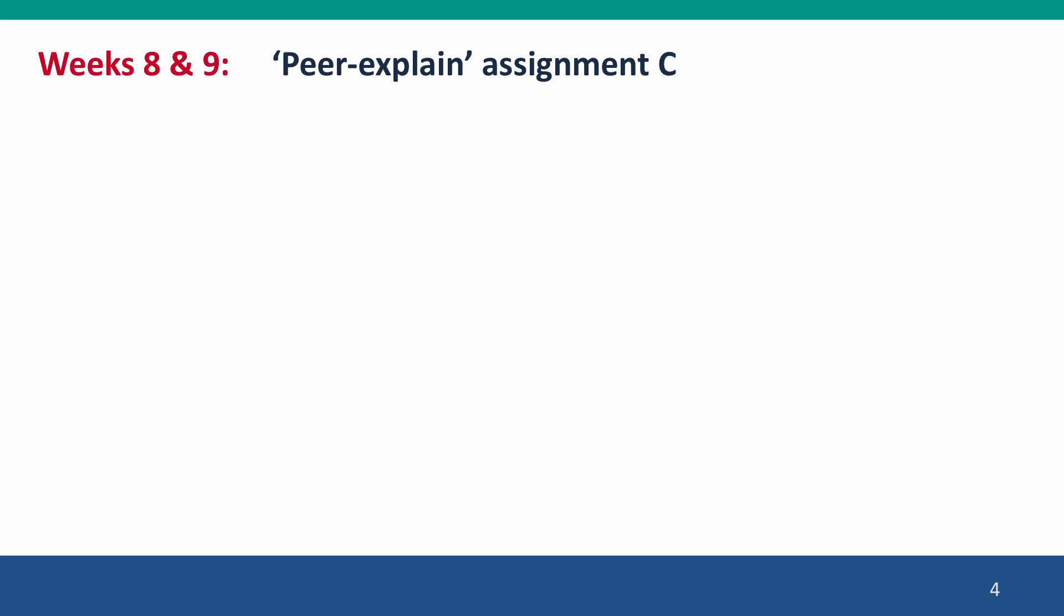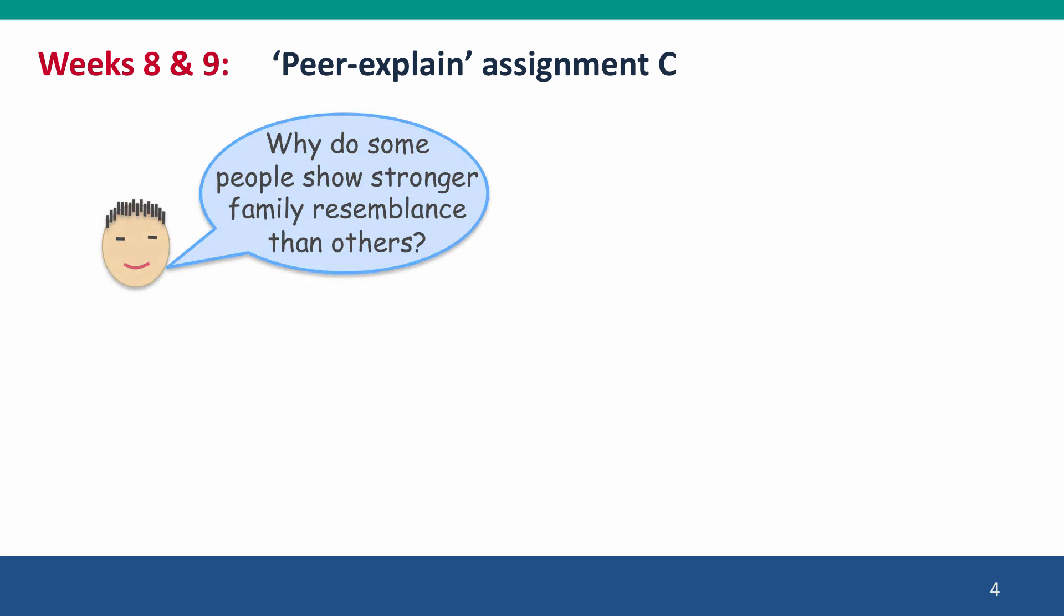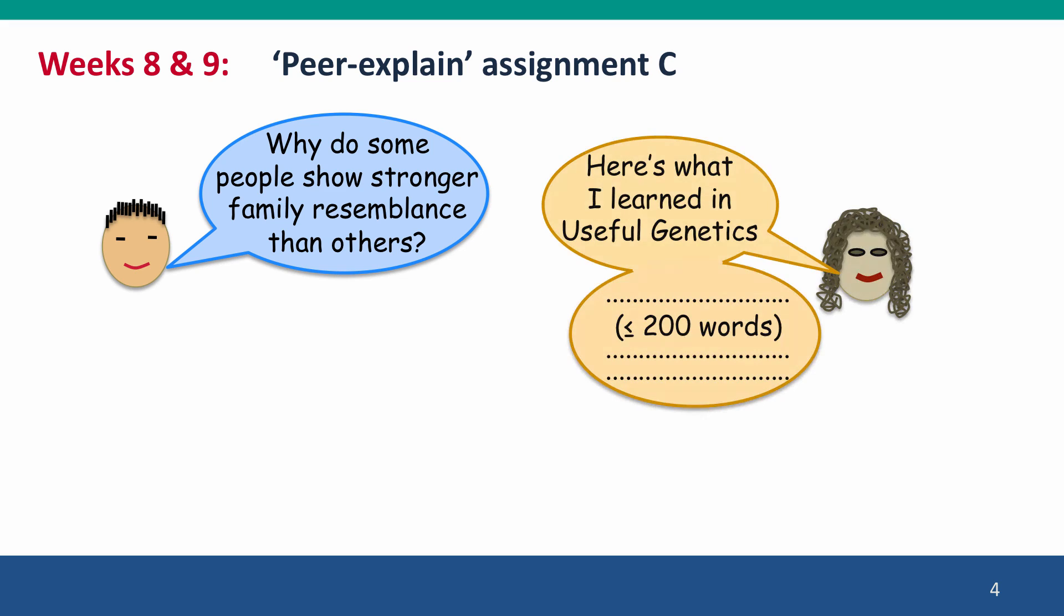Now, for those of you who were not in Part 1 in the last two months, I want to introduce our Peer Explained assignments. These are assignments that were motivated by a desire to help students build their skills at explaining what they've learned to people who don't know genetics, to friends and relatives, for instance. And to do this, we have, in this part of the course, two assignments where you will be given a question, the kind of question that you might get from a friend or relative, somebody you met at the pub or in the park. And you'll have 200 words in which to come up with an explanation that ordinary, non-genetically trained people could understand. And then your explanation will be evaluated and graded by other students.